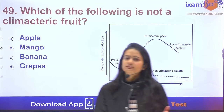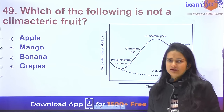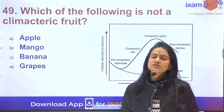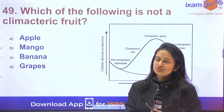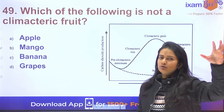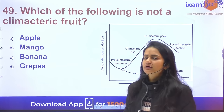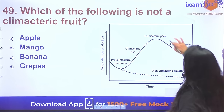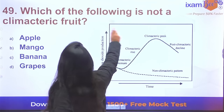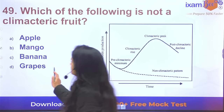Question 49: There are two types of fruits — climacteric and non-climacteric. Which of the following is not a climacteric fruit? The answer is grapes — grapes are non-climacteric. Apple is a climacteric fruit.